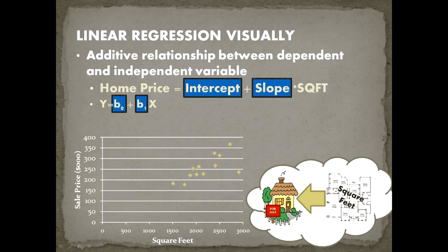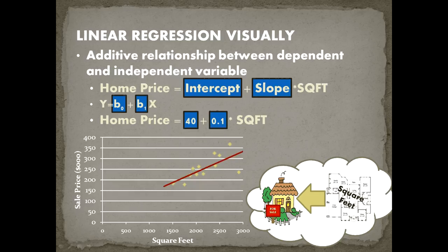It's our job to pick β₀ and β₁. For example, if home price equals 40,000 plus 0.1 times the square footage, and I were to plot that — picking an intercept and a slope — I would get a line through the data that may be a very accurate predictor of our home sale price.